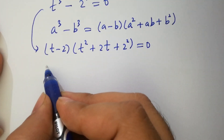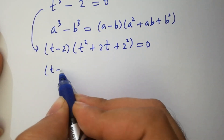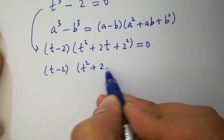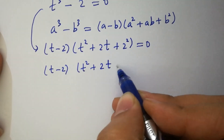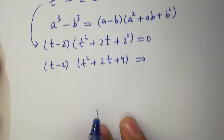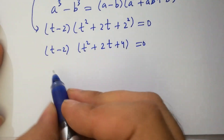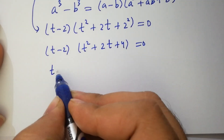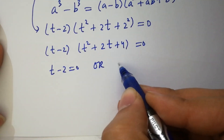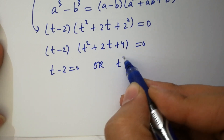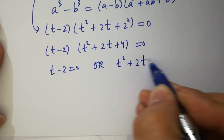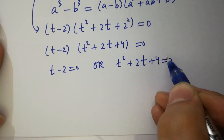It will be t minus 2, times t squared plus 2t plus 4, equal to 0. Either t minus 2 equals 0, or t squared plus 2t plus 4 equals 0.